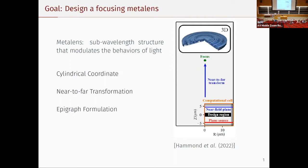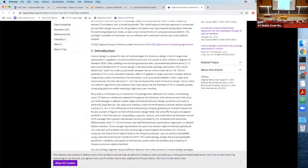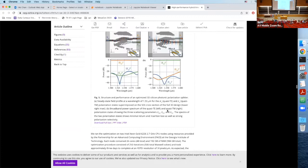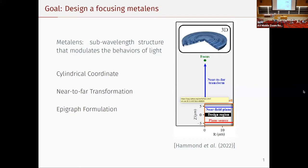This example is similar to the one in our paper. The reason I really like it is that it has three key components. First, it uses cylindrical coordinates to do a 3D design. Second, it uses near-to-far transformation so we only need a smaller simulation cell. Third, it uses epigraph formulation to optimize several quantities simultaneously. These components are all important and useful regardless of your specific design.